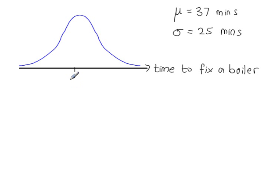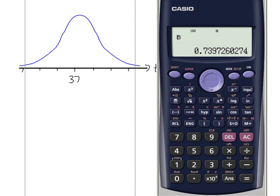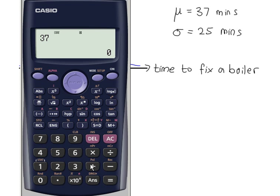The mean goes in the center, 37 minutes, and then you go 1, 2, 3 standard deviations to the right, and you go 1, 2, 3 standard deviations to the left. So, 37 minutes, that's the mean, plus 3 standard deviations, so 3 times 25, 3 lots of standard deviations there, 112.